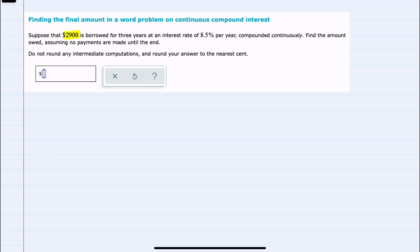We're told to suppose that we are borrowing $2,900 for three years at a rate of 8.5% per year, compounded continuously to find the amount after three years. And the continuous compounding means that the formula that I should use is A equals P, E to the R, T.